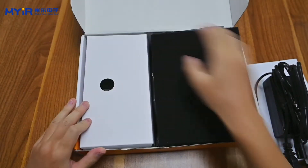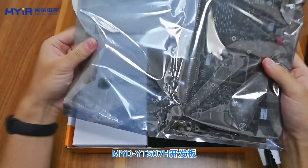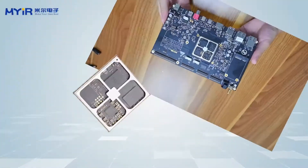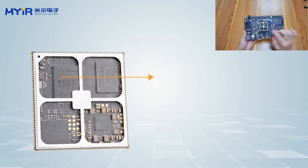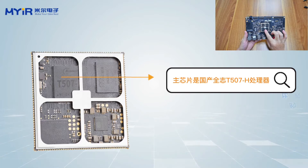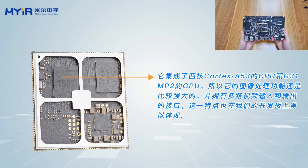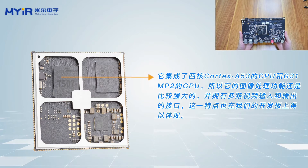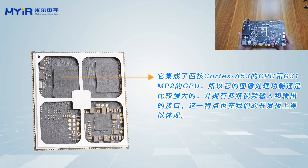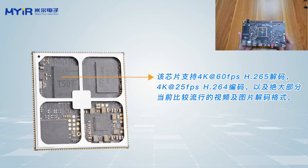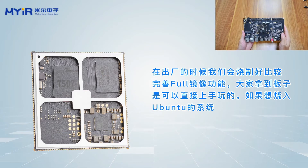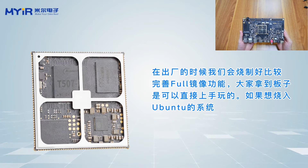Now we will focus on the MYCYT507H development board. It comes in an anti-static bag package. The board uses a domestic Allwinner T507H processor, integrating a quad-core Cortex-A55 CPU and a Mali-G31 MP2 GPU. Its imaging processing function is powerful, with multiple video inputs and outputs. The chip supports 4K at 60fps H.265 decoding, 4K at 25fps H.264 encoding, and most currently popular video and picture decoding formats. This board has 1GB DDR4 and 8GB eMMC, and we will burn a factory program image with relatively complete functions for the board.